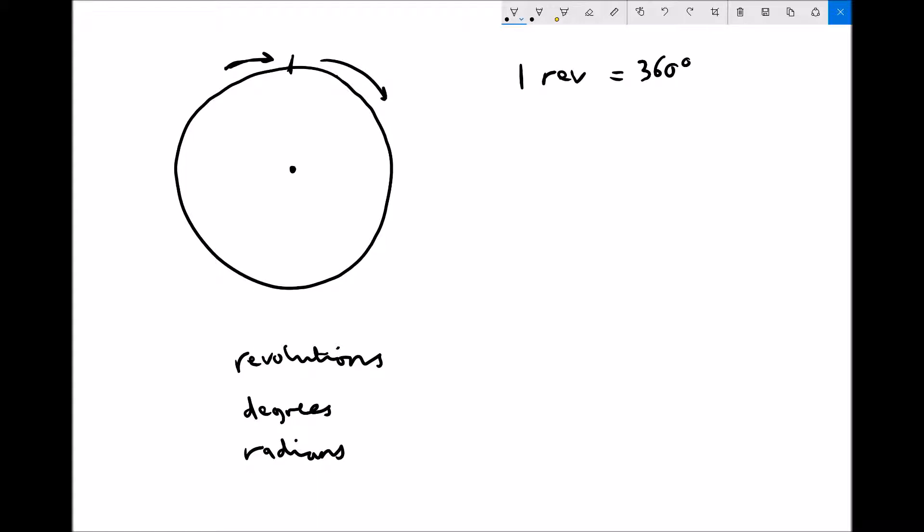But today we're going to introduce a new angular measurement and that angular measurement is the radian. Now to begin with, one full revolution is two pi radians. So one rev is two pi radians, and if you do two pi on your calculator then that is 6.283 to three decimal places. So one revolution is 6.283 radians.